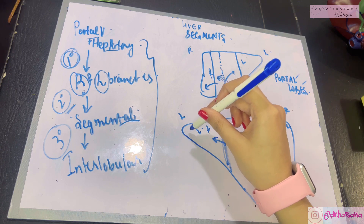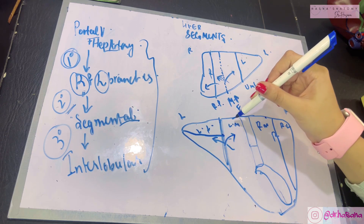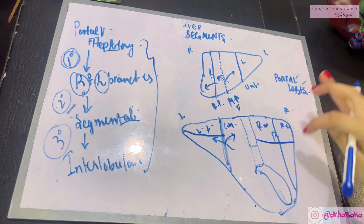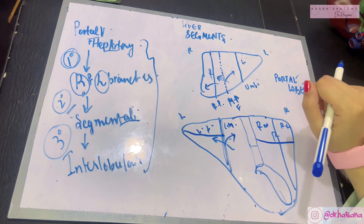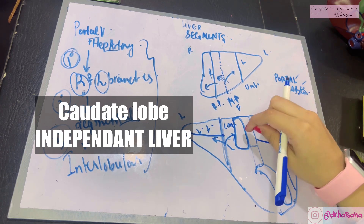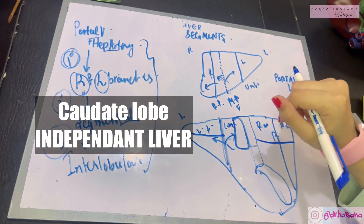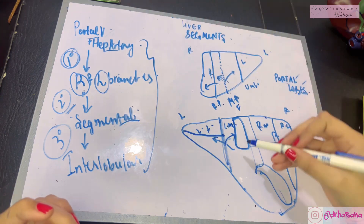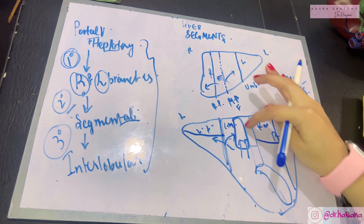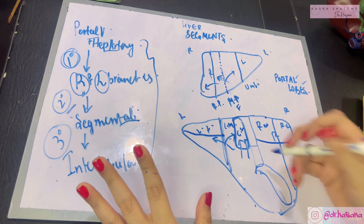Another plane further divides these four divisions into segments of the liver: the transverse hepatic plane, which passes horizontally but does not pass through the left medial division. This gives us seven segments visible this way — one, two, three, four, five, six, and seven. The eighth segment is actually the caudate lobe of the liver. The caudate lobe is like an independent liver — you could remove all other liver tissue and it would function independently, because both the right and left branches supply it. It receives blood supply from both, making it segment eight.